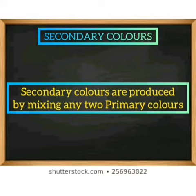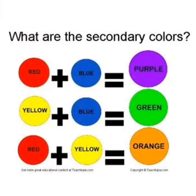Now let us know about the secondary colors. Secondary colors are produced by mixing any two primary colors. Red and blue becomes purple, yellow and blue becomes green, and red and yellow becomes orange.